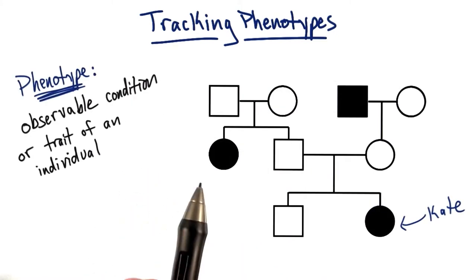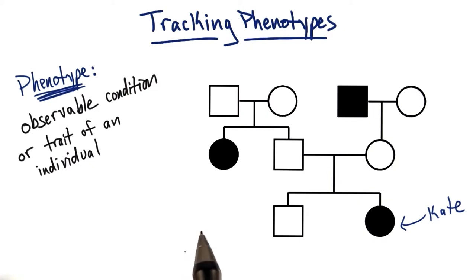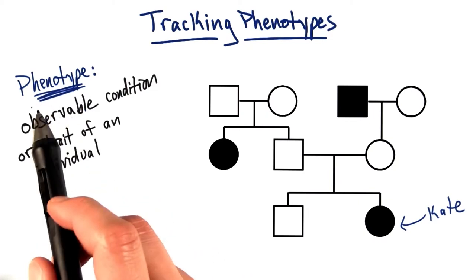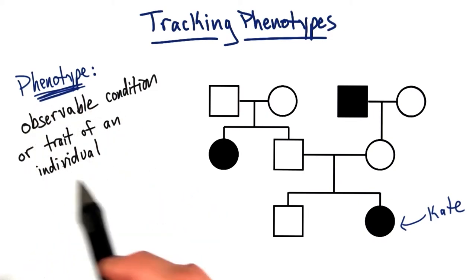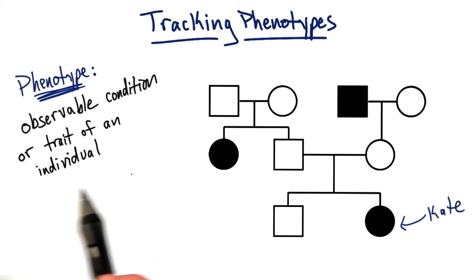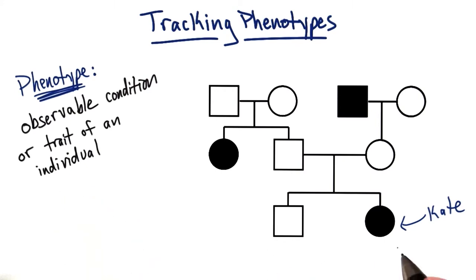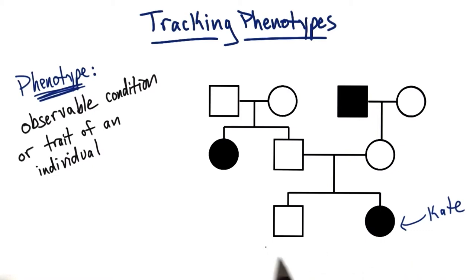The shading of these shapes in the pedigree allows us to identify the phenotype, or the observable condition or trait of an individual. So in this pedigree, Kate's phenotype is lactose intolerance, whereas her brother's phenotype is lactose tolerance.